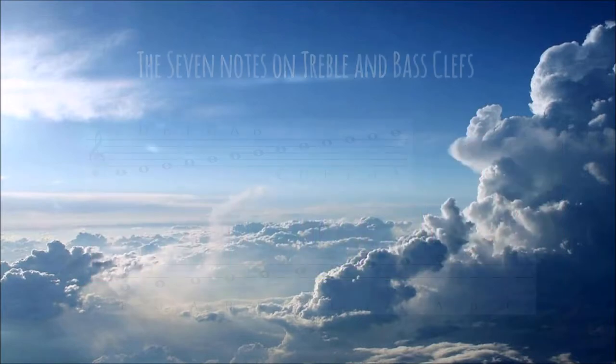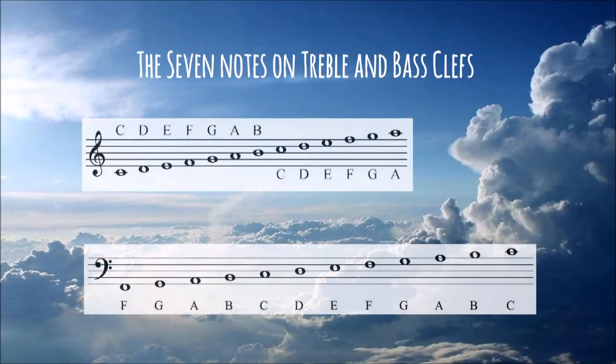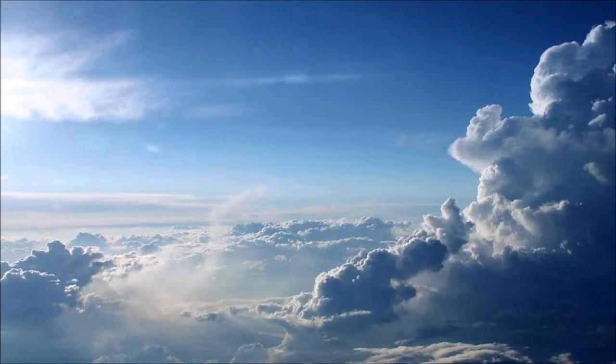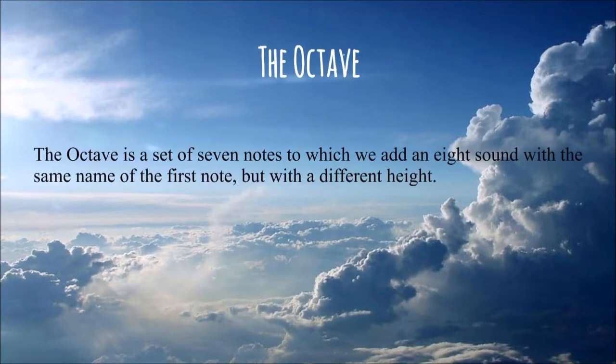Now let's write all the seven notes on the staff using the treble clef and the bass clef. We have visualized the octave — the set of seven notes to which we add an eighth sound with the same name as the first note, but with a different pitch.